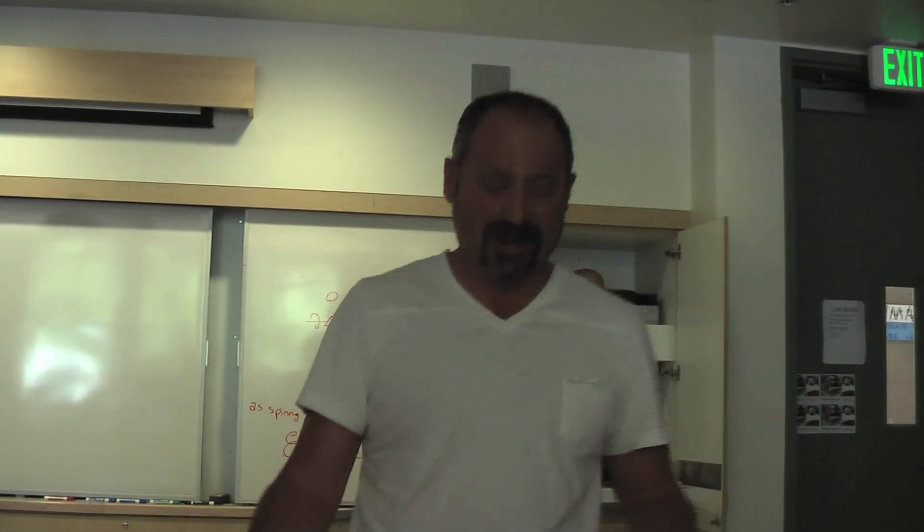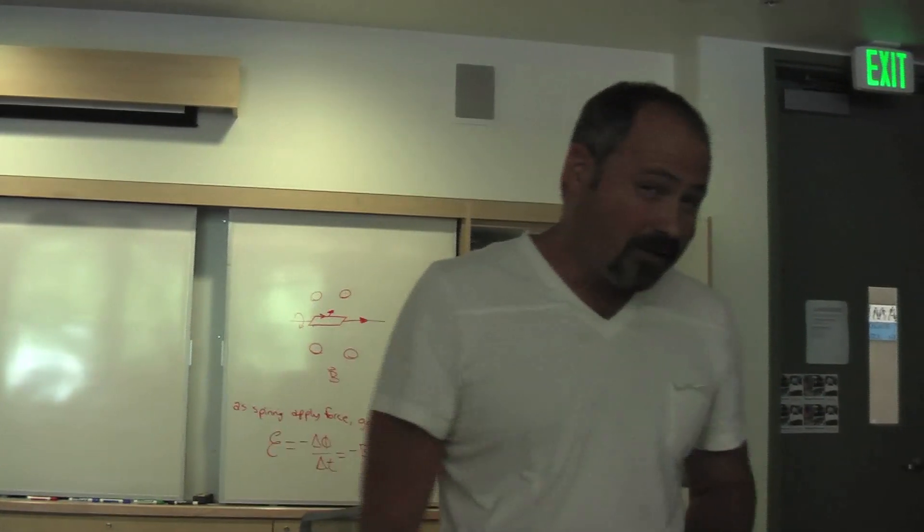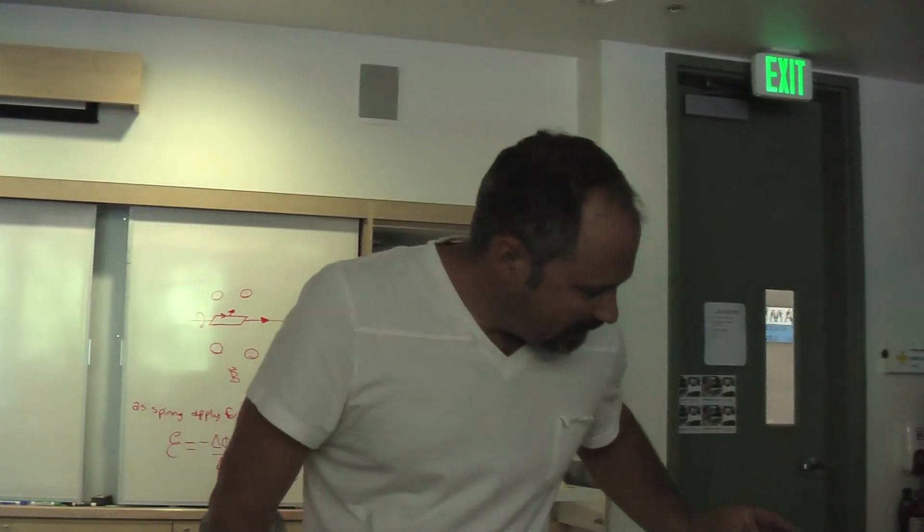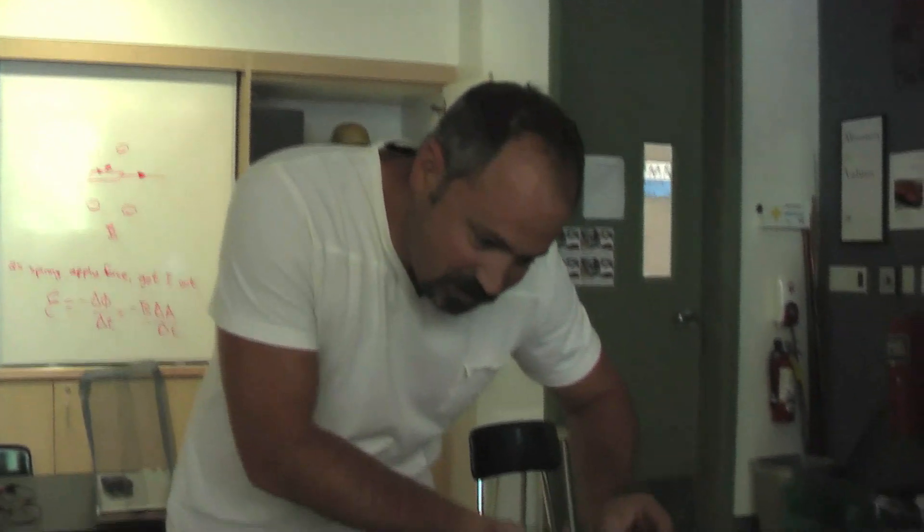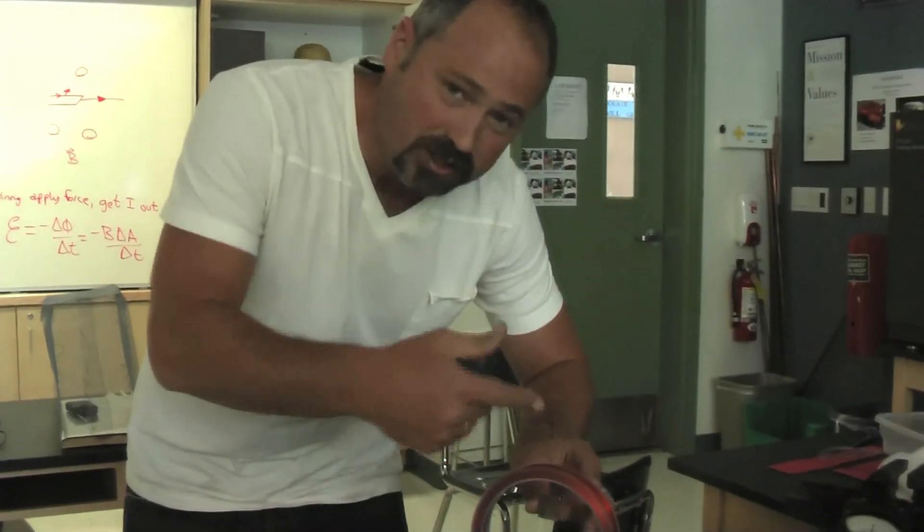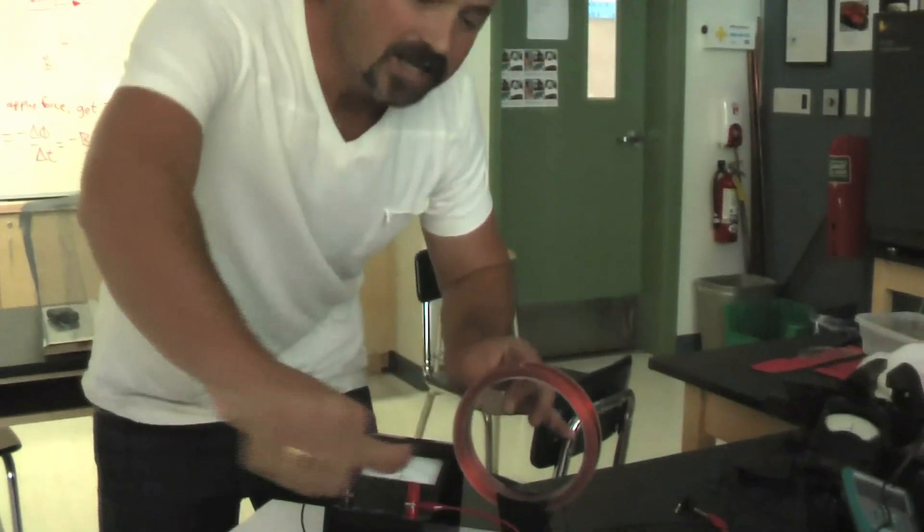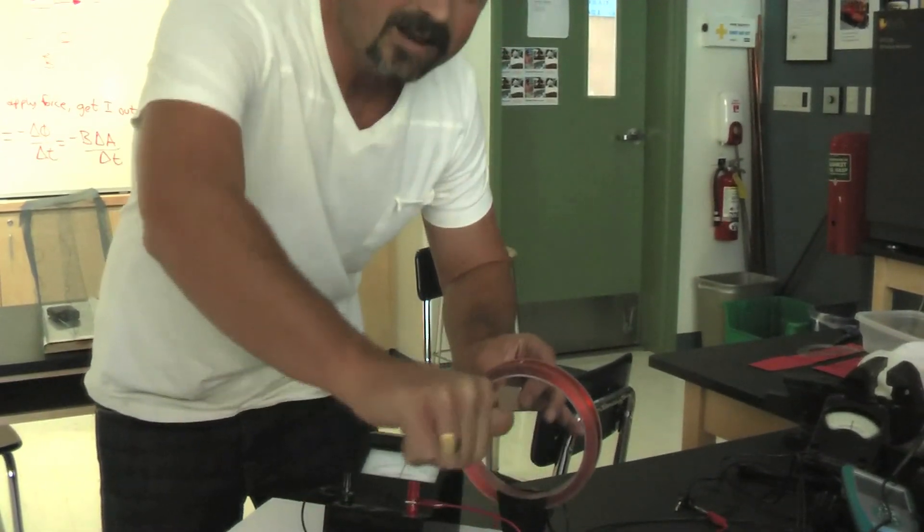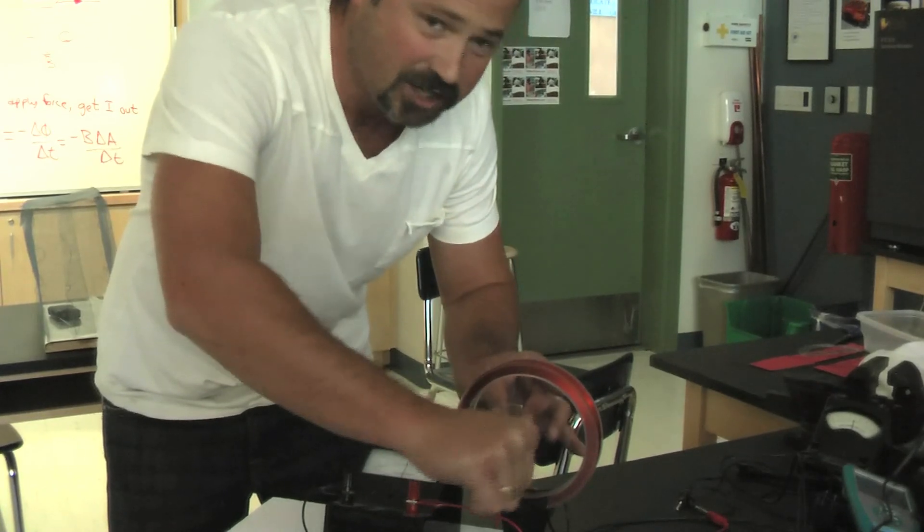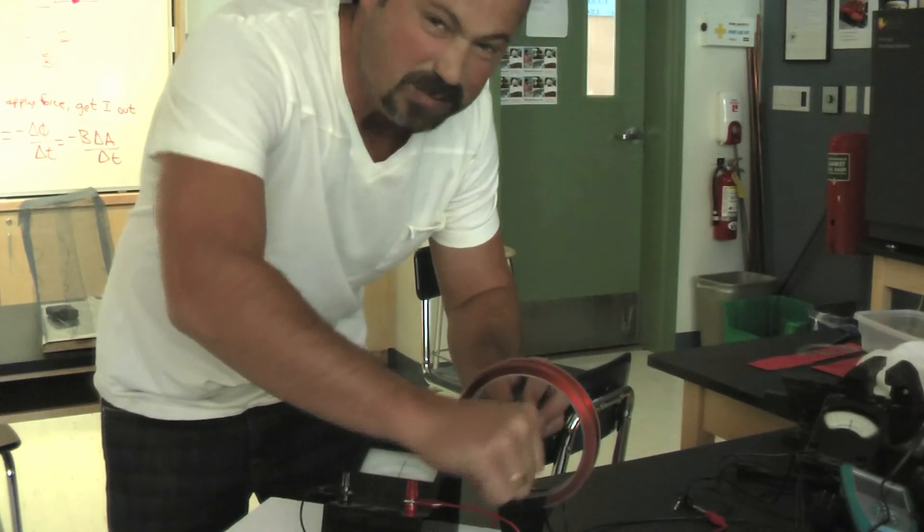Now we know where your electricity comes from, or more specifically, how your electricity is created. And we also learned about Lenz's Law. As the magnetic field is increasing, increasing in this coil, well, electricity will flow in this direction, so it generates a magnetic field that opposes that change. Basically, it tries to keep it the same.